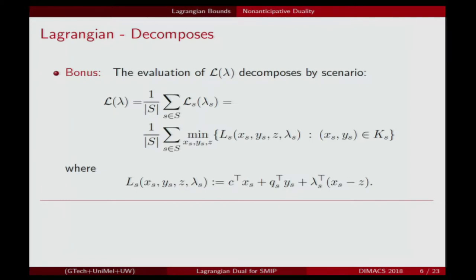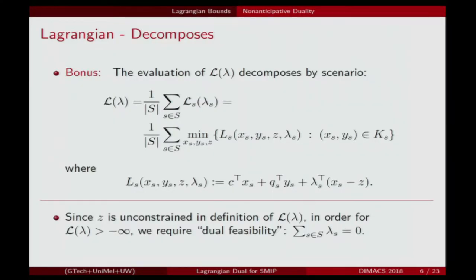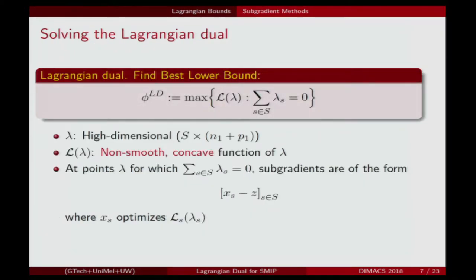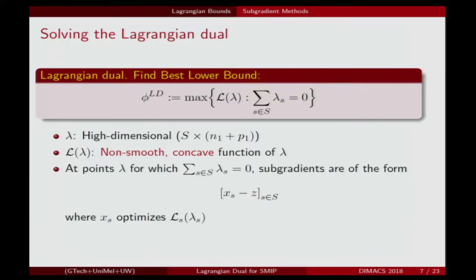We should remember that this is not a trivial subproblem — it will take some time, so we want to make the most use out of the information we get. A dual feasibility condition is that the sum of all dual multipliers should be equal to zero. The Lagrangian dual problem is to maximize over all dual-feasible lambda vectors this Lagrangian dual function — finding the best lower bound.